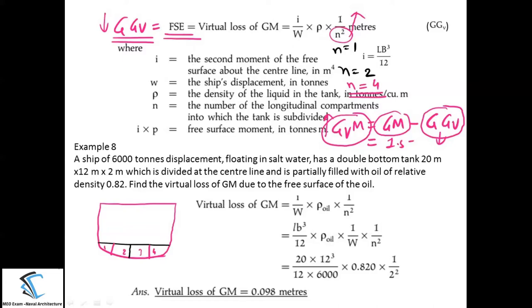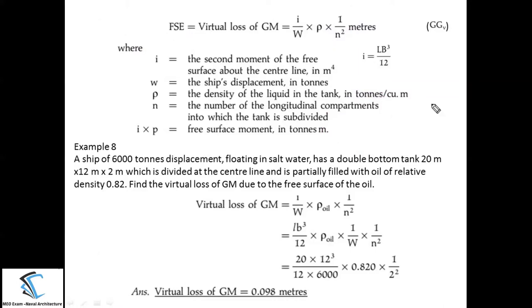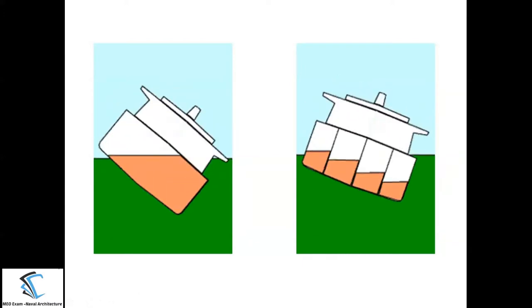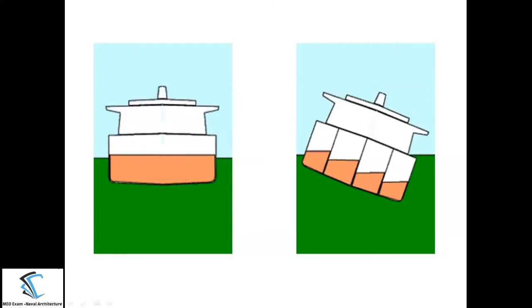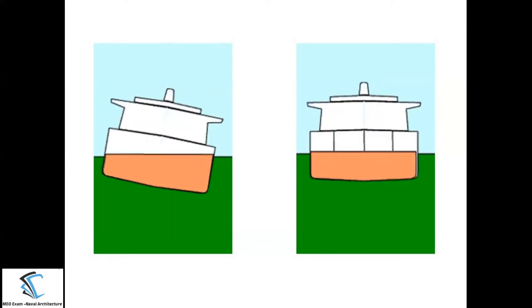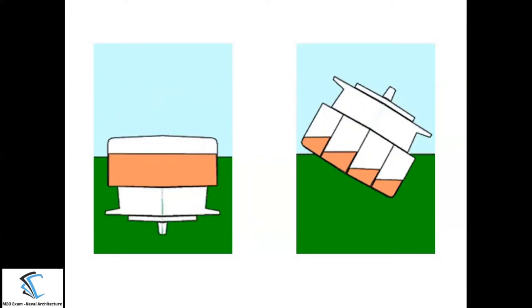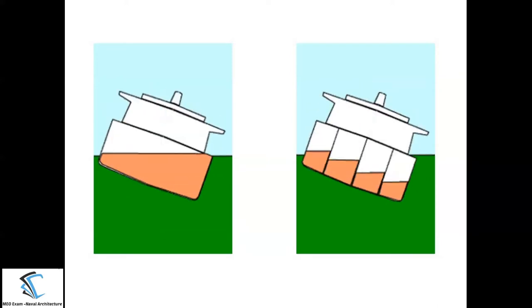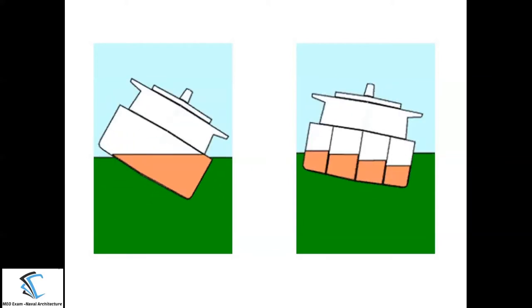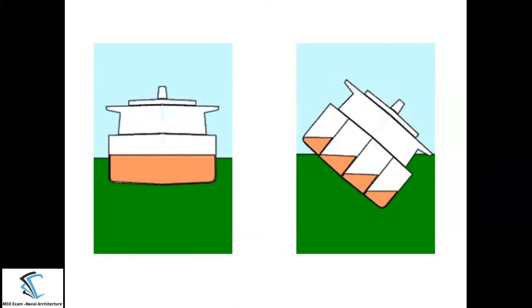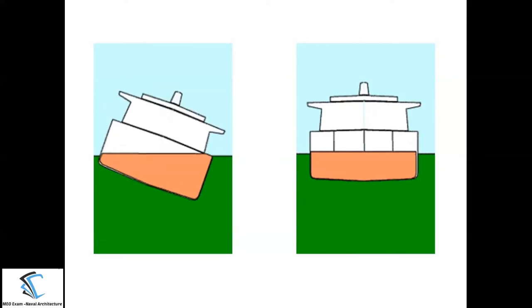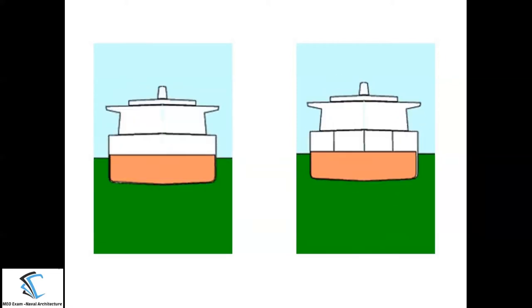Let us understand this through an animation. On the screen, there are two ships — the left ship has no longitudinal compartments, and the right ship has four longitudinal compartments, both filled with liquid to the same level. For the same heeling moment, the left ship capsizes while the right ship does not. This demonstrates the advantage of creating watertight compartments inside the tank.